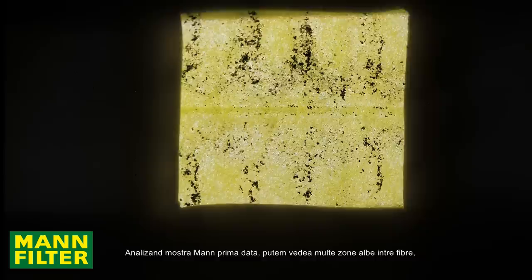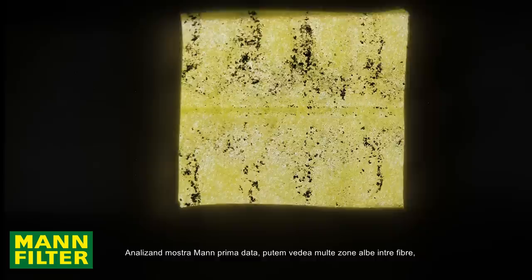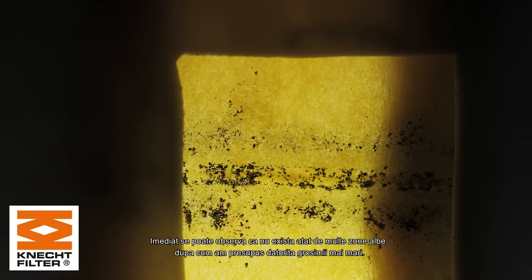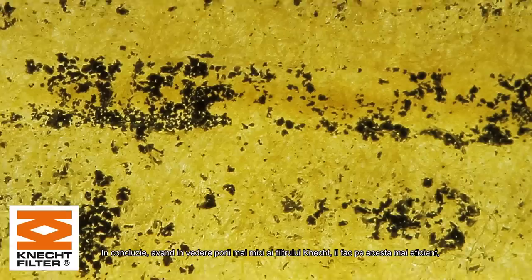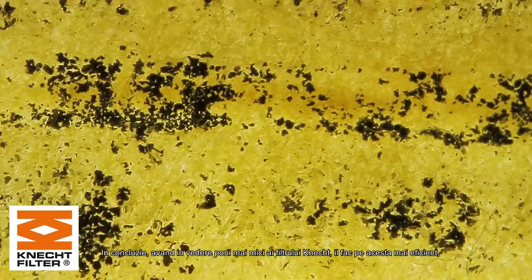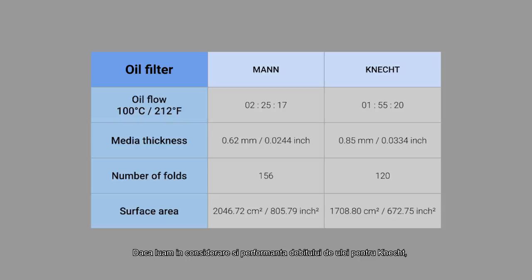Look at the MAN sample first, we can see a lot of white areas between the fibers. As the media in this filter is thinner, there is a chance that smaller particles can pass through, although we can see some particles that have been caught inside. Now let's take a look at the Kinect sample. Immediately we can see that there are less gaps between the fibers in this one, but we could already assume this because we knew that the media was thicker in this one. In conclusion, the smaller gaps and the thicker paper make the Kinect filter more efficient, despite having a smaller surface area. Taking into consideration that this one also did better in the flow test, from my point of view this makes it the winner of this episode. Tell me what you think about this test in the comment section below.